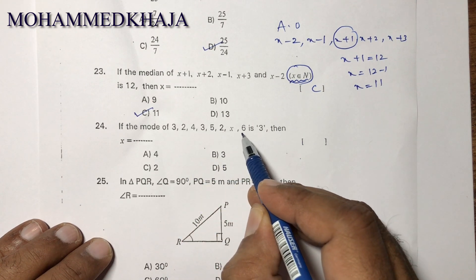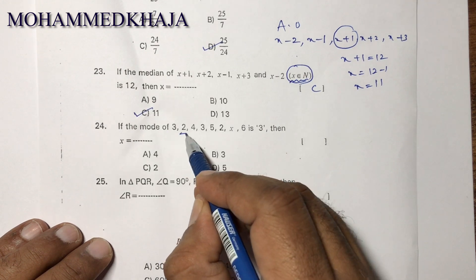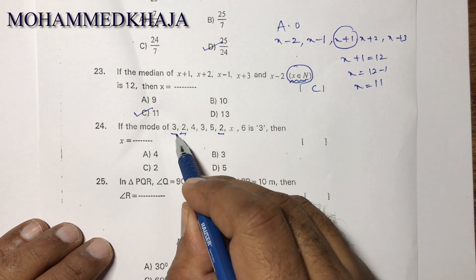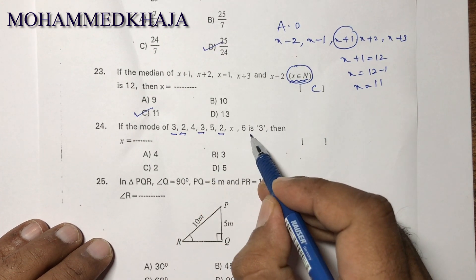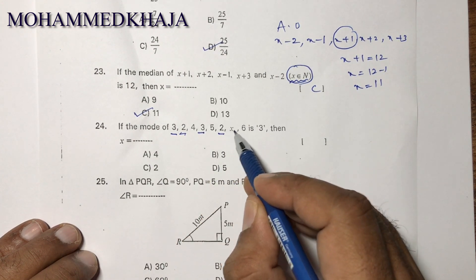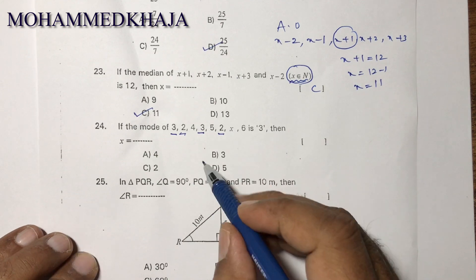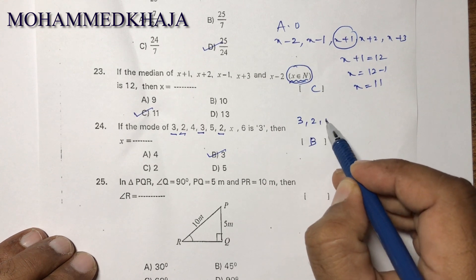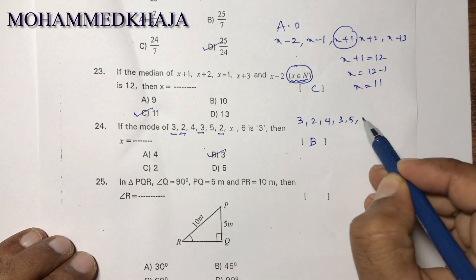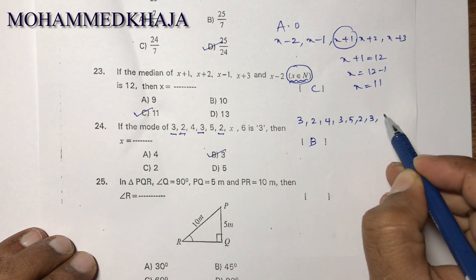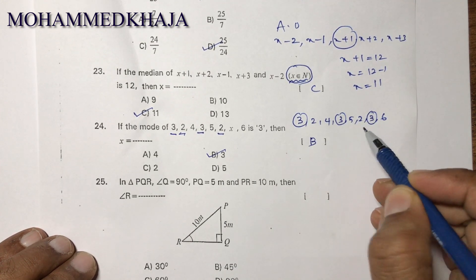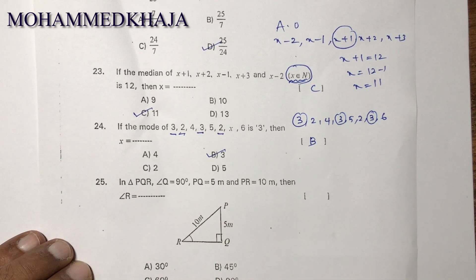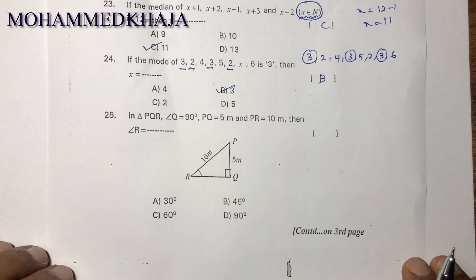If the mode of the observations 3, 2, 4, 3, 5, 2, x, 6 is 3, then both 2 and 3 appear twice currently. Since the mode is 3, x must equal 3. With x as 3, the set becomes 3, 2, 4, 3, 5, 2, 3, 6 — and 3 appears three times, making it the mode. The correct option is B.